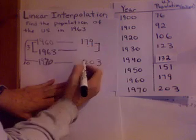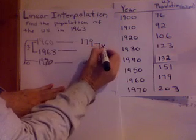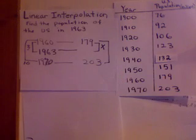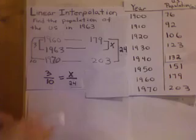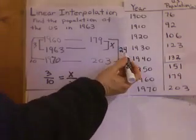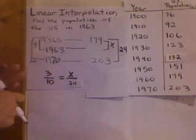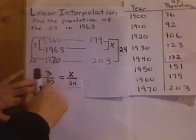The ratio from here to here, I don't know, so I'm going to call that x. But the ratio from here to here, I can use my calculator and subtract. So once I have my ratio, x over 24 and 3 over 10, I set up this fraction.